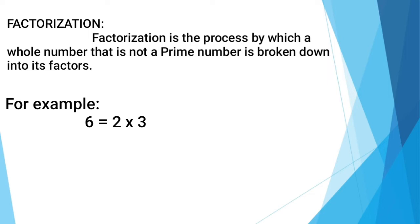Factorization is the process by which a whole number that is not a prime number is broken down into its factors. For example, the whole number is 6 and the factors of 6 are 2 and 3. So the number 6 is broken by the factors of 2 and 3.